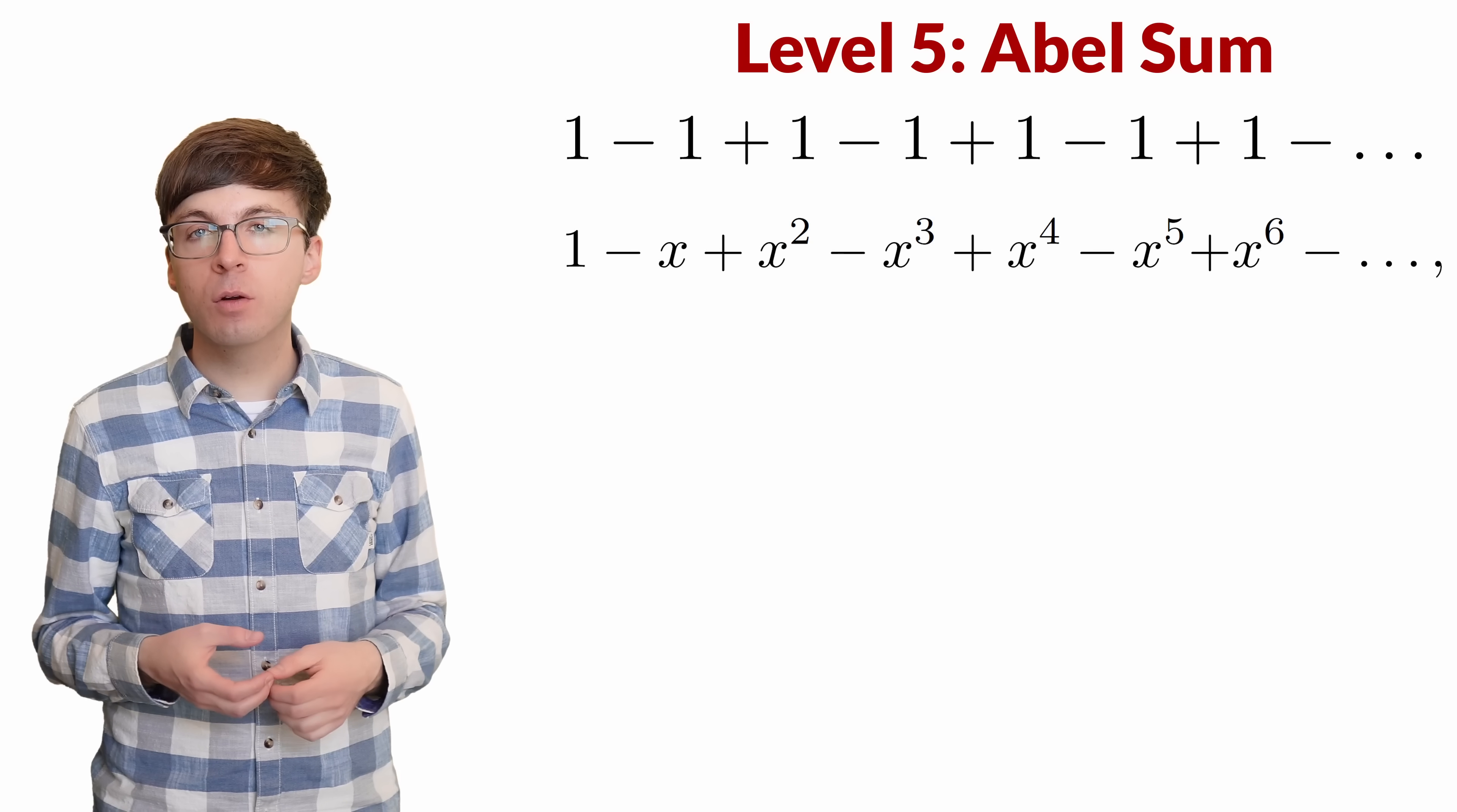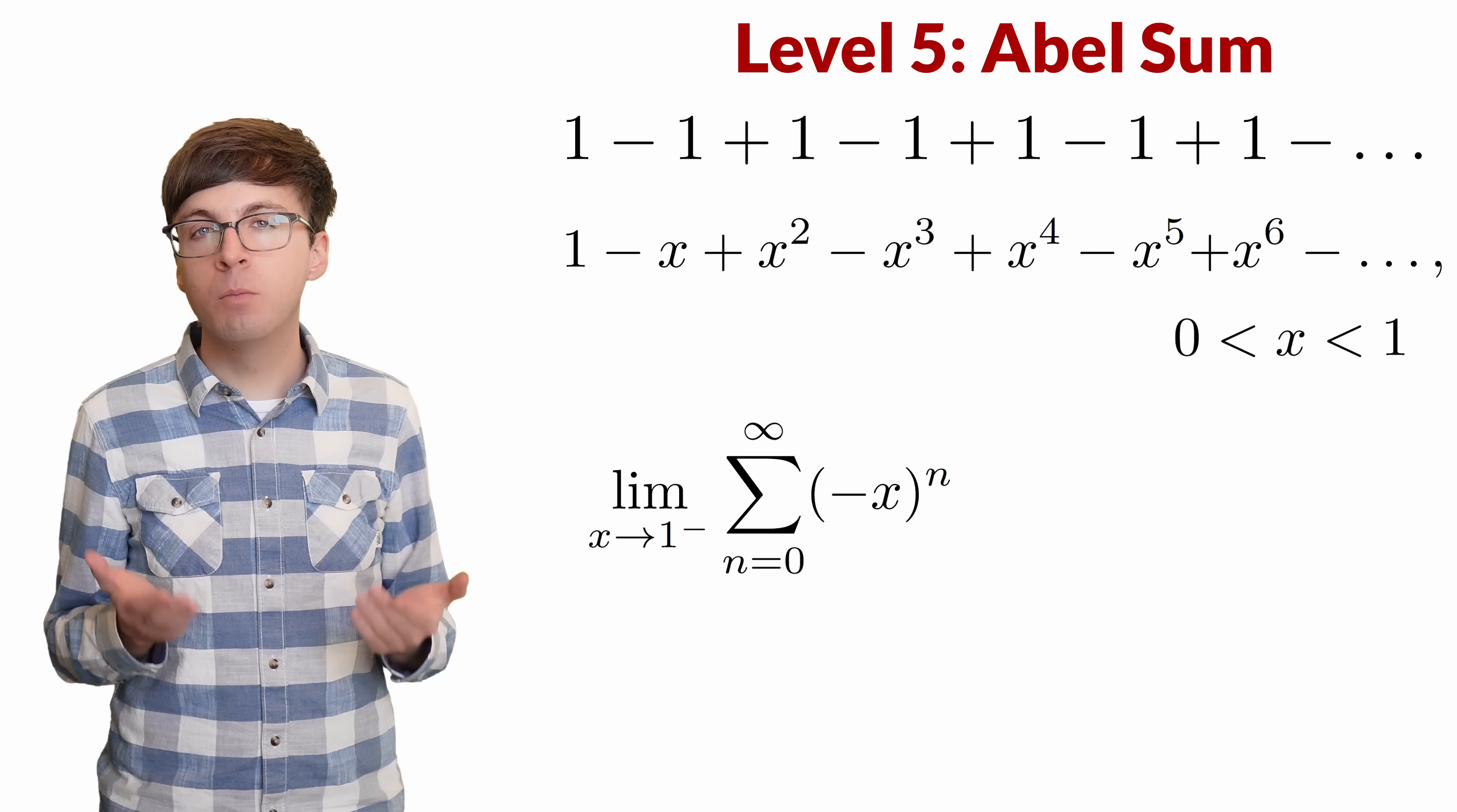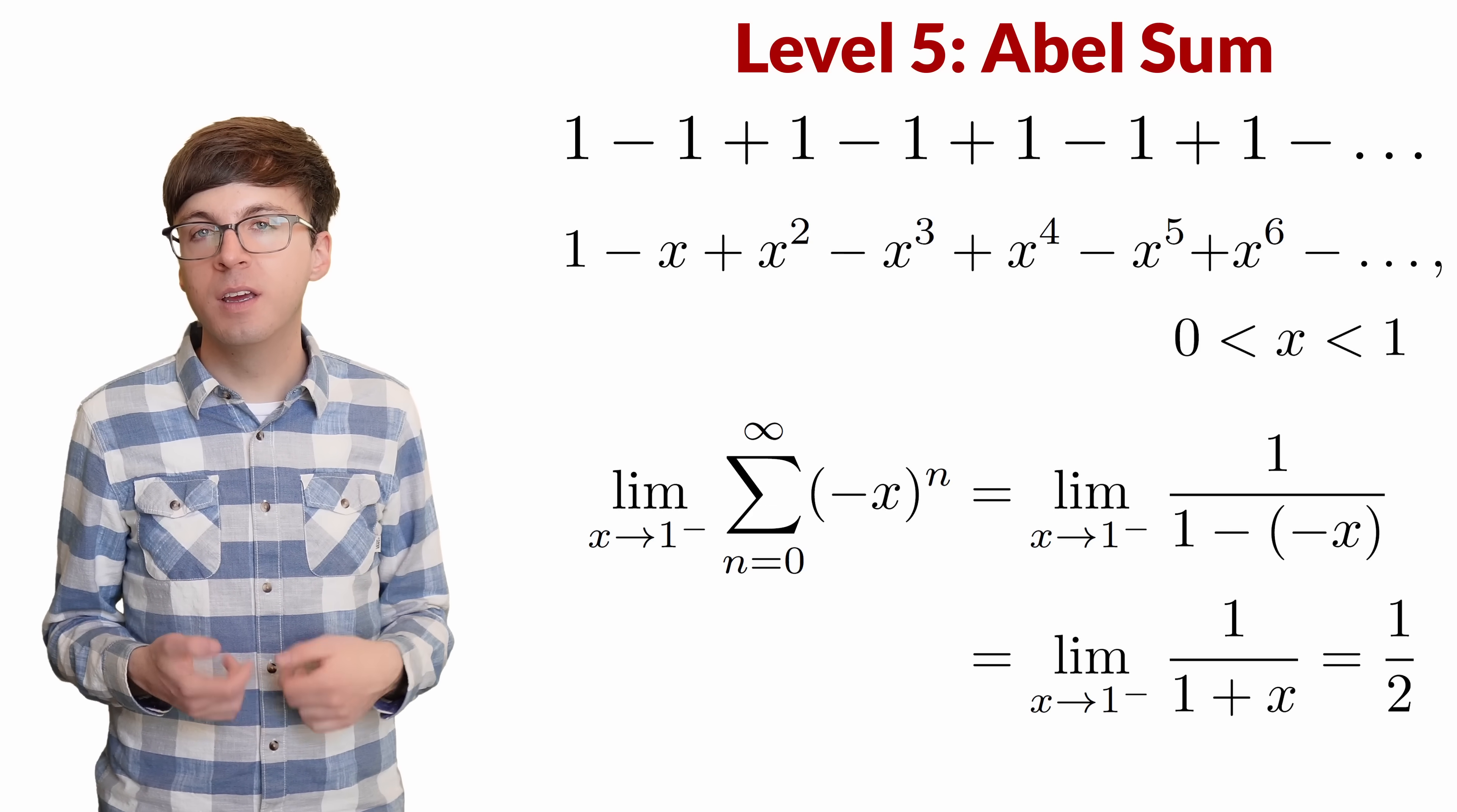The power series is different than our original series, but the idea is if x is equal to 1, then all those x's go away, and we're right back to the original series. Since the original series is divergent, we don't want to just plug in x equals 1. So instead, we'll let x be between 0 and 1, and then we'll take the limit as x approaches 1. This power series is a geometric series, since to go from one term to the next, we multiply by negative x. x is strictly between 0 and 1, so we can apply the geometric series formula. The first term is 1, and the common ratio r equals negative x. So we get 1 over 1 minus negative x, which equals 1 over 1 plus x. Then we take the limit as x approaches 1. This function is continuous there, so we can just plug in x equals 1 to get 1 half.